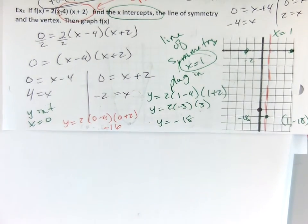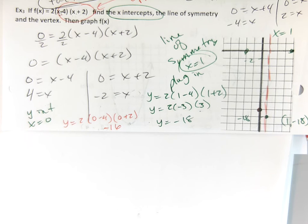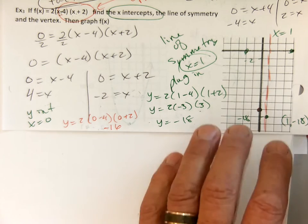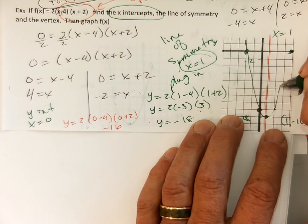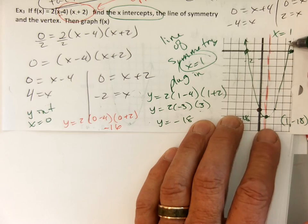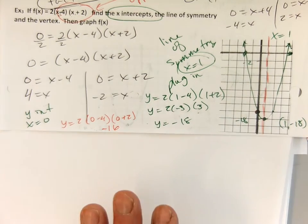And of course we've got one more point we can just find — the symmetrical point. You can notice it. And then I'm done. I put my graph down. All right, this is one of the harder units.